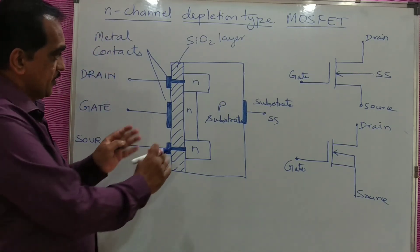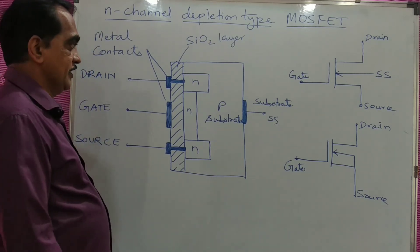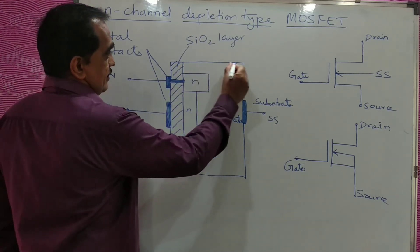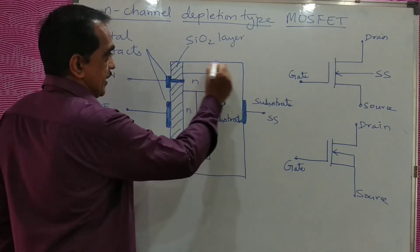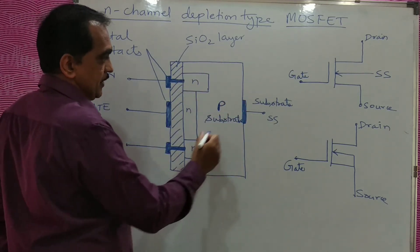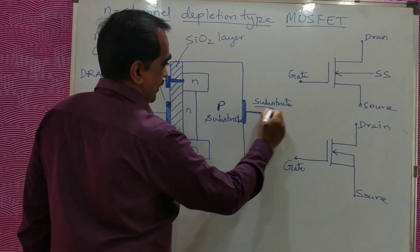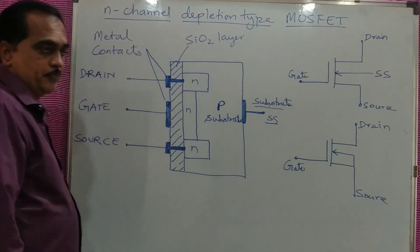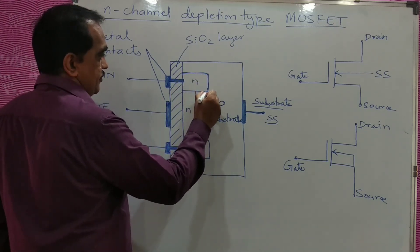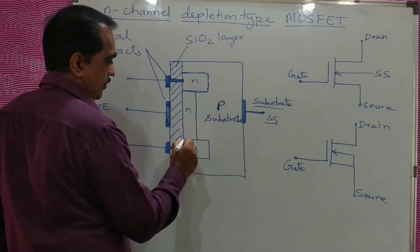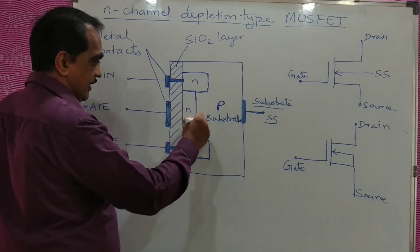This is the structure of N-channel depletion type MOSFET. You can see here this is a P-type substrate. You are having a metal contact here and you can take that contact as substrate. N-type semiconductor is induced here and also here, and there is a link between them.